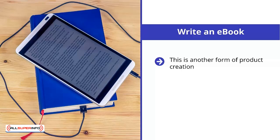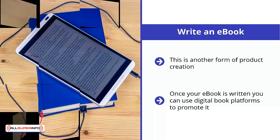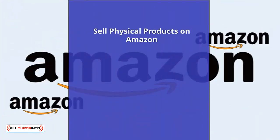Write an ebook. This is another form of product creation. You will write an ebook, or outsource the writing, that solves a problem your audience has. You will need to research this to ensure that there is sufficient demand for you to make good passive income. Once your ebook is written, you can use digital book platforms to promote it. The most popular of these platforms is Kindle, owned by Amazon.